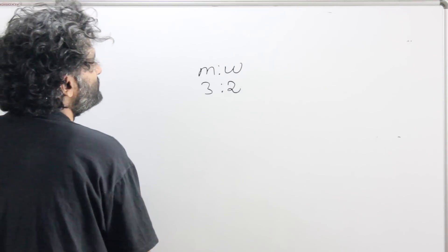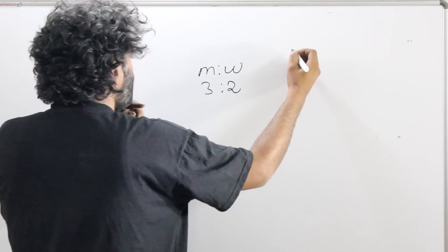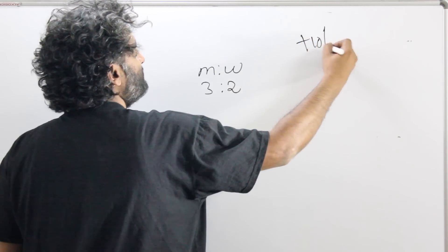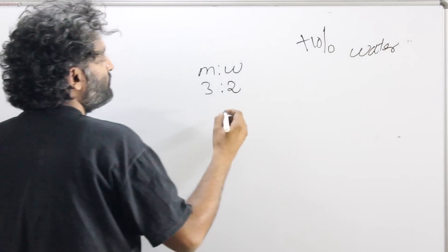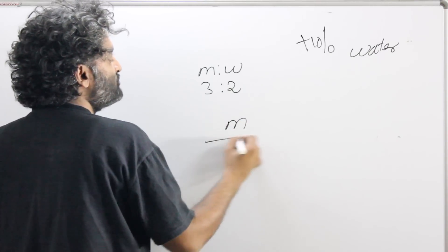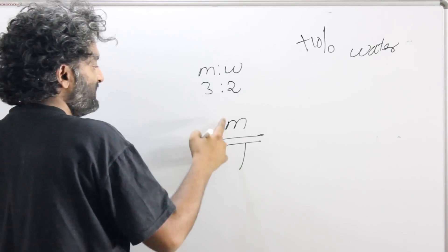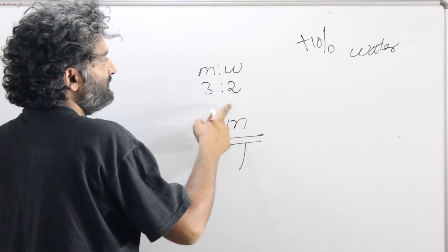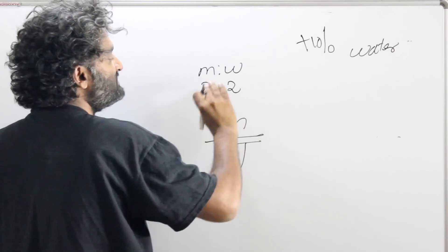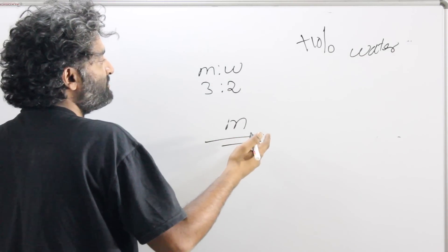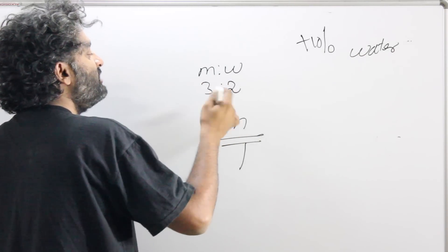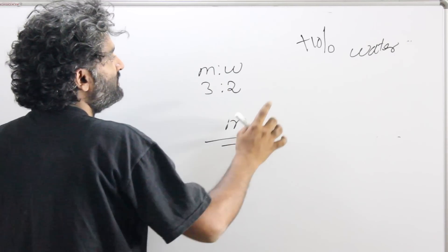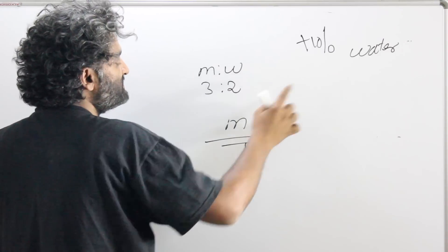Say the same question: there is a milk and water solution where the ratio is 3:2 and its volume is increased by 10% by adding water. Instead of the scale method, let's use basic ratio understanding. We track milk/total because water is being added — milk quantity will not change in the process, water will change, but milk remains the same.